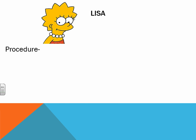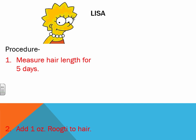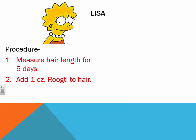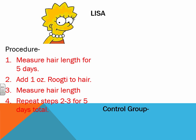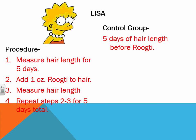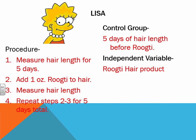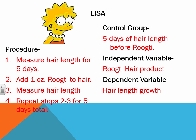Finally, Lisa. Procedure: 1) Measure hair length for five days. 2) Add one ounce of ragouti to the hair. 3) Measure hair length. 4) Repeat steps two through three for a total of five days. Control group: five days of hair length before ragouti. Independent variable: ragouti hair product. Dependent variable: hair length growth.